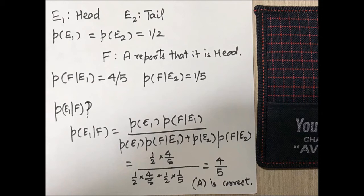Now if there is a head and person is speaking the truth, then the probability is 4/5, because it's clearly mentioned that the probability that person speaks the truth is 4/5.